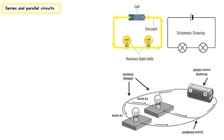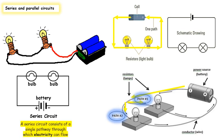A parallel circuit has two or more paths for current to flow through. Electrons will leave the negative terminal of a battery and have two pathways to go through — path one and path two. Sometimes electrons have more than two paths. A series circuit consists of one single pathway, while a parallel circuit consists of two or more pathways through which electrons can move.